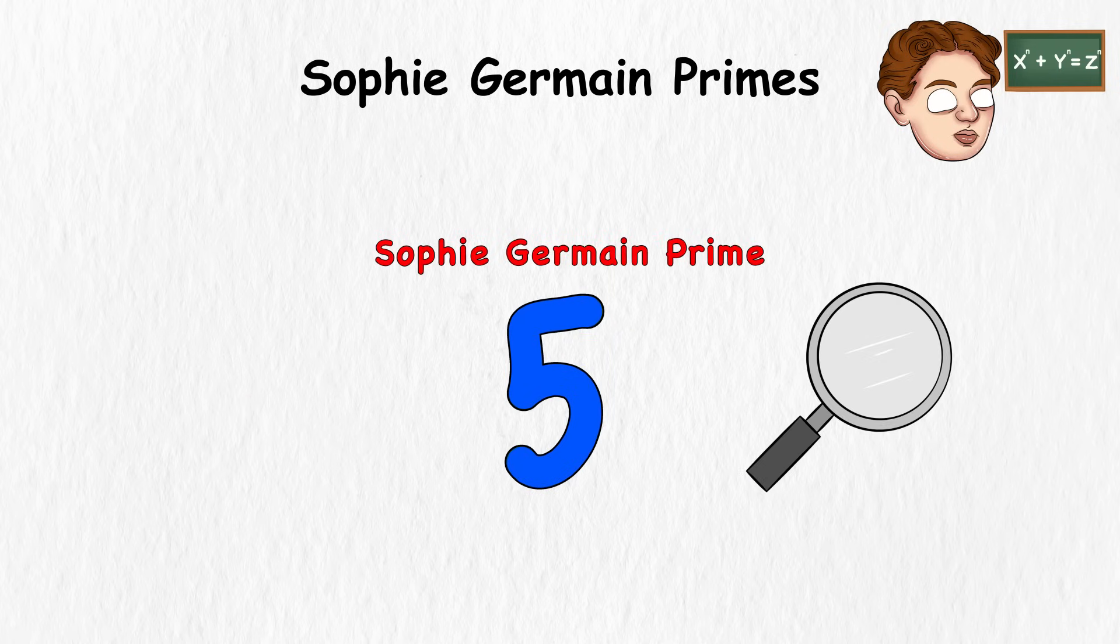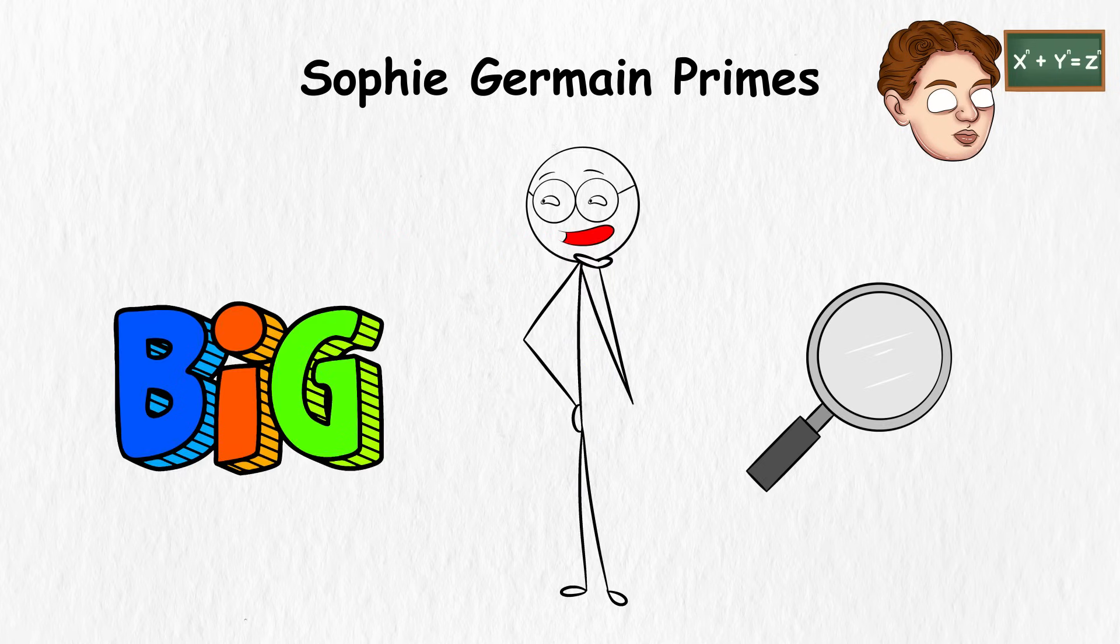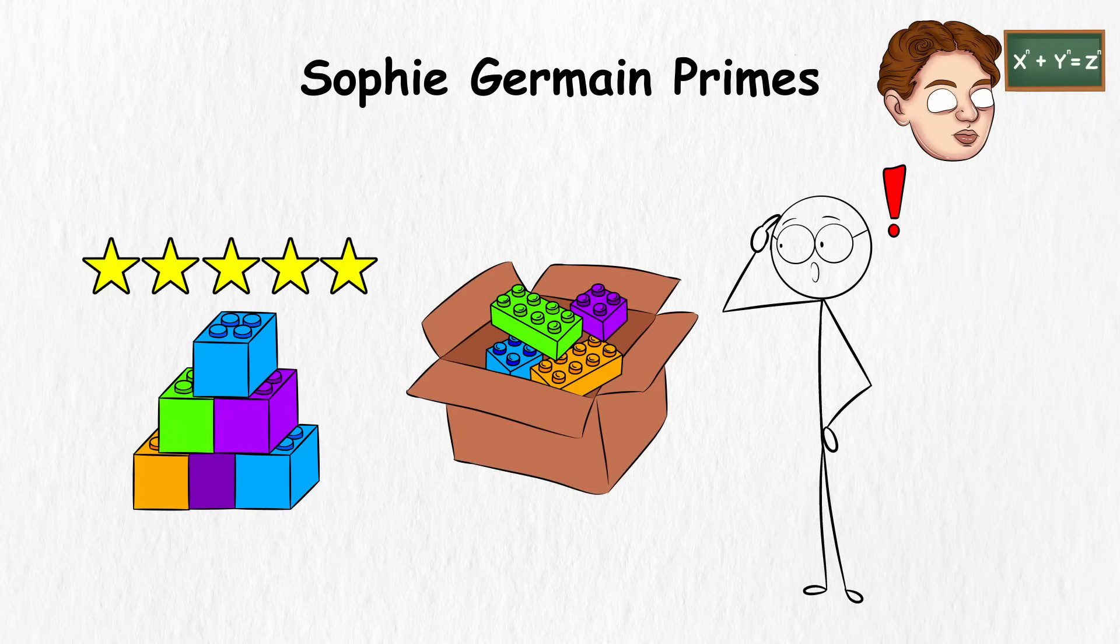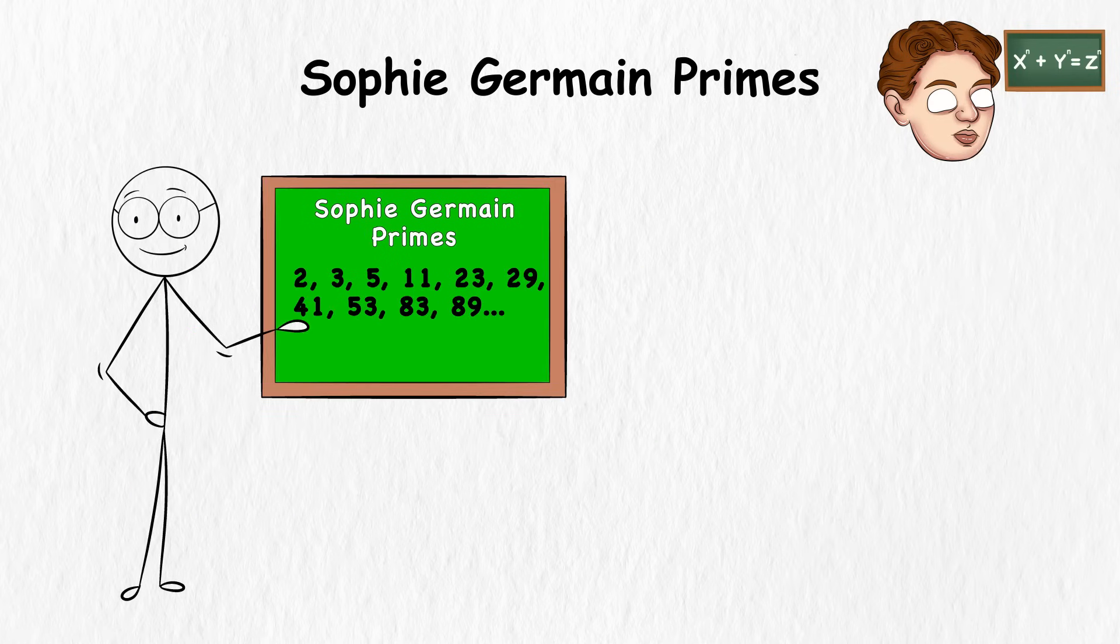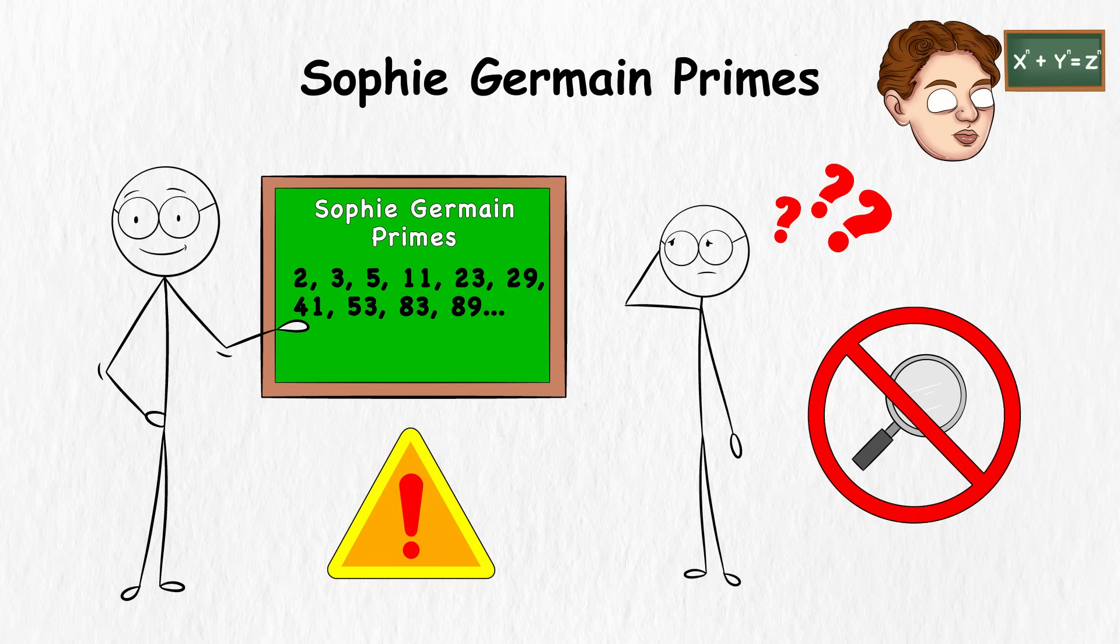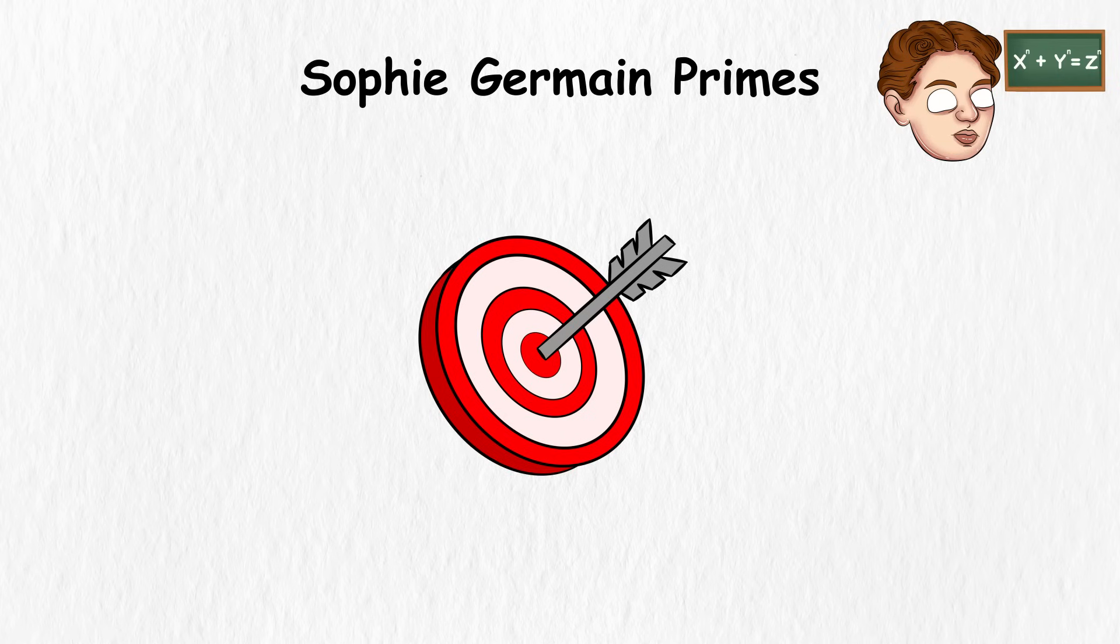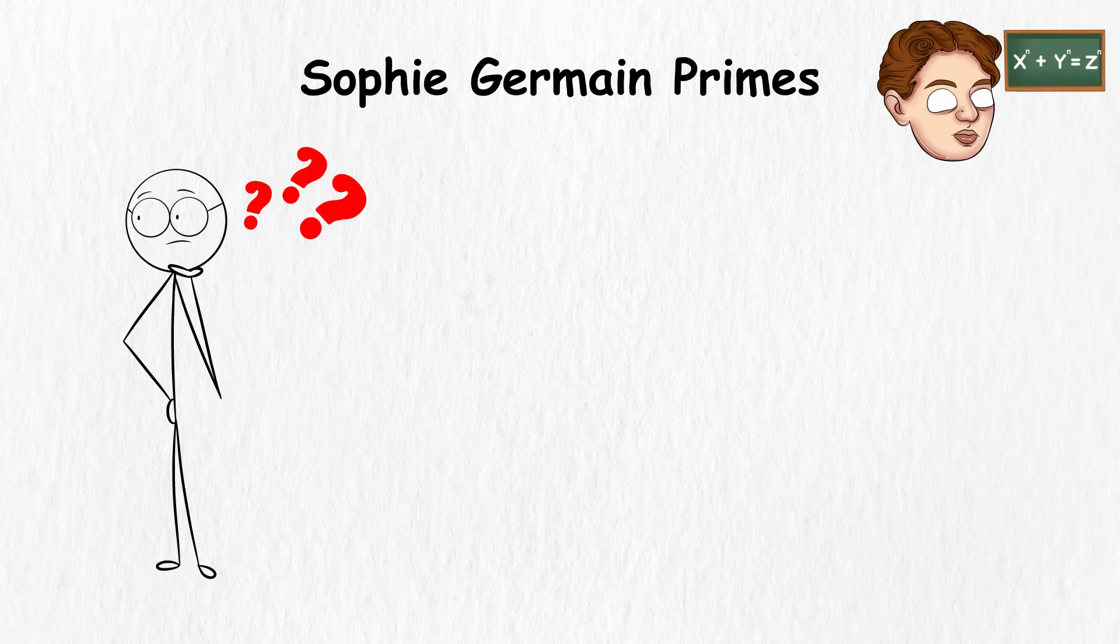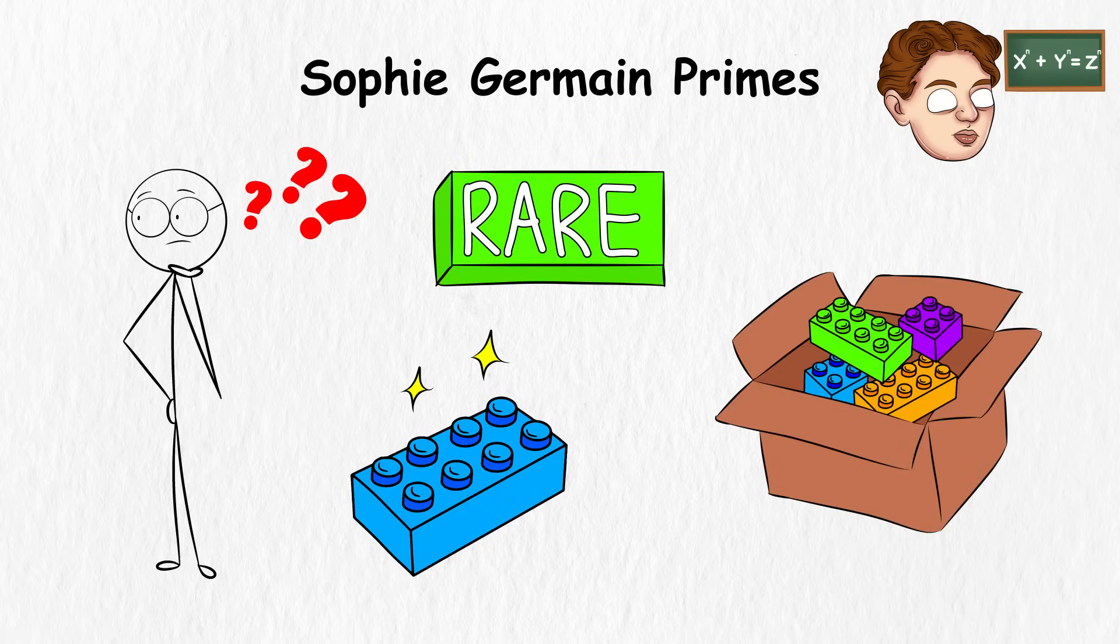Now, if you want to find Sophie Germain Primes that are really big, it gets much trickier. It's like searching for those special Lego bricks among an enormous pile. Mathematicians have found some Sophie Germain Primes that are very large, but it's hard to find new ones, because the numbers get so huge and difficult to check. So when we say Sophie Germain Primes are unsolvable, we don't mean they can't be found at all. Instead, we just mean it's a huge challenge to find them, as they get bigger and bigger, and there's no easy way to predict where the next one will appear. It's like looking for a rare piece of Lego in a vast, endless sea of bricks.